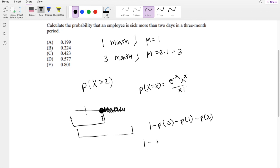So now I'll just plug it in. 1 minus e^-3 times 3^0 over 0! minus e^-3 times 3^1 over 1! minus e^-3 times 3^2 over 2 factorial, or just 2.